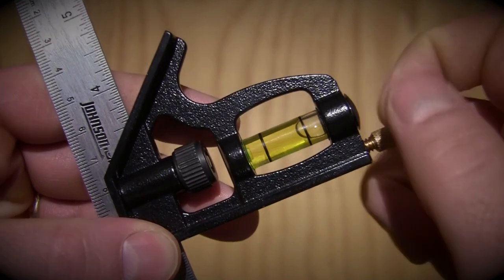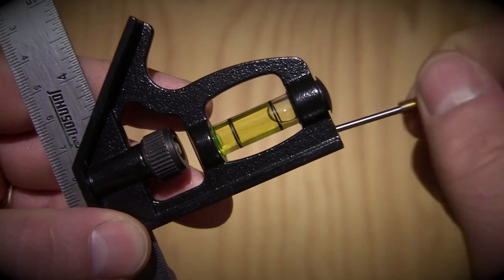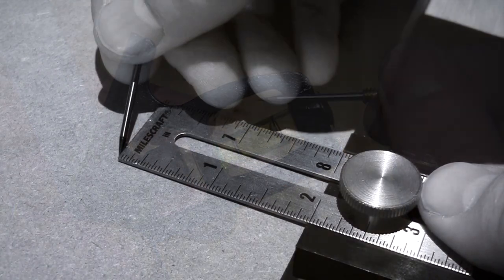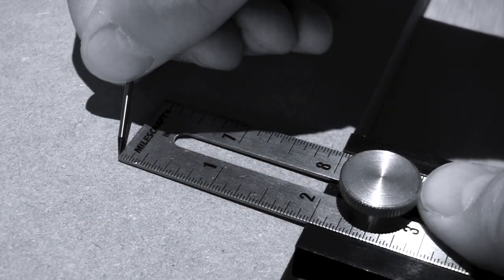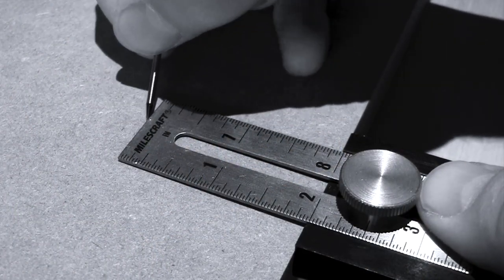Using a scribe - now if you don't think you own a scribe, check your combination square because chances are you have one. I then butted up my exactor against the edge of the MDF and scribed a line at the 2 inch mark.